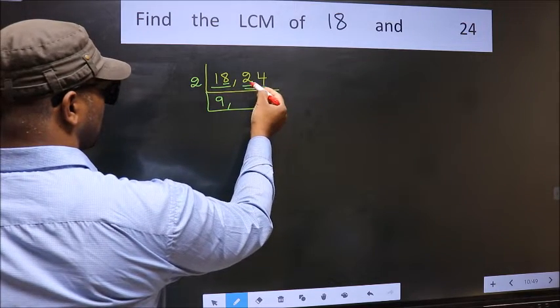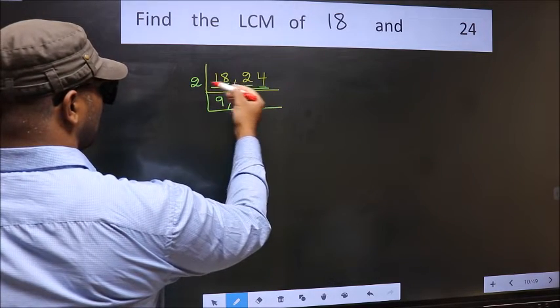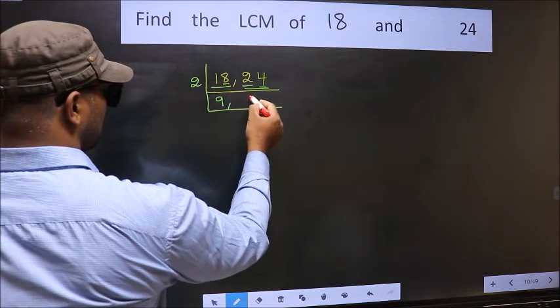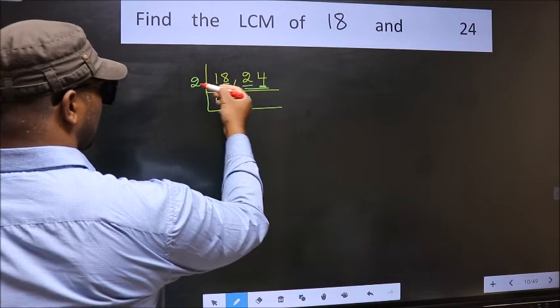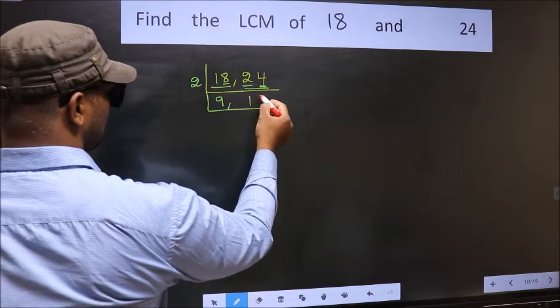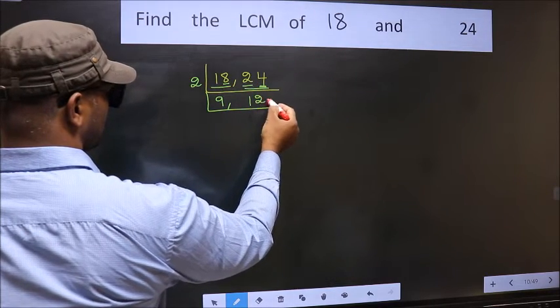First number 2 — when do we get 2 in the 2 table? 2 times 1 is 2. The other number 4 — when do we get 4 in the 2 table? 2 times 2 is 4.